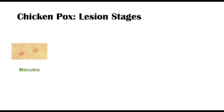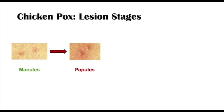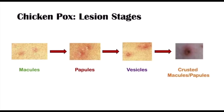The stages of skin lesions in chickenpox begin with macules, which can occur within 24 hours of the end of the incubation period (around 15 days). These macules rapidly progress into papules, which are raised. The papules then form into vesicles — fluid-filled vesicles — and eventually these vesicles will erupt. This is the general progression of chickenpox lesions.